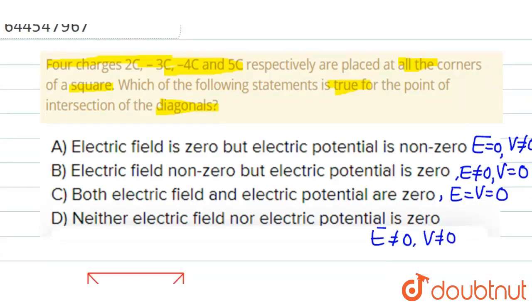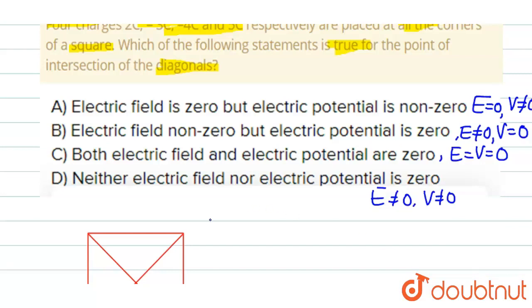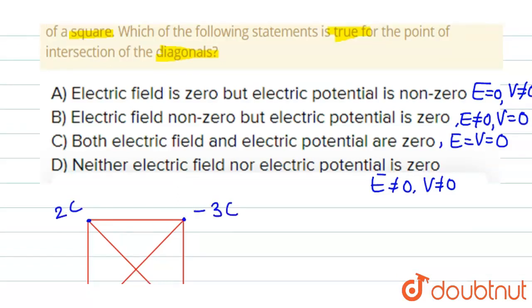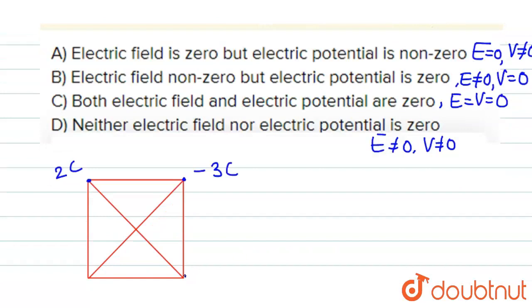Let's consider a square. The charges placed at the corners are, suppose the first charge is 2 coulomb, second minus 3 coulomb, third minus 4 coulomb and fourth charge is 5 coulomb. And these are the diagonals, AB and CD are the diagonals and point O is the intersection of the diagonals.